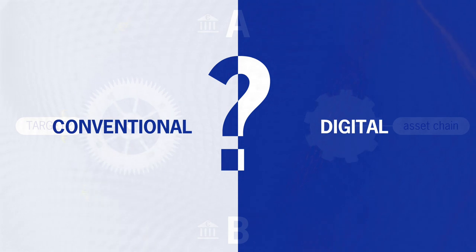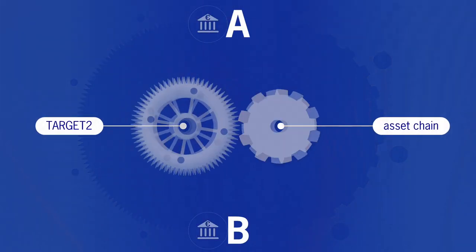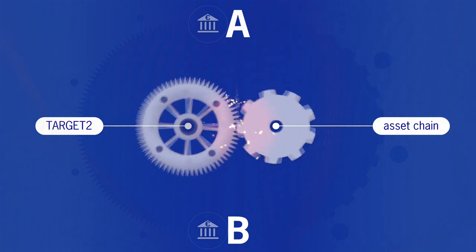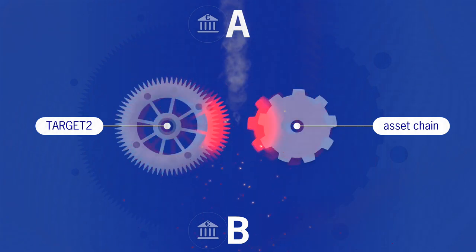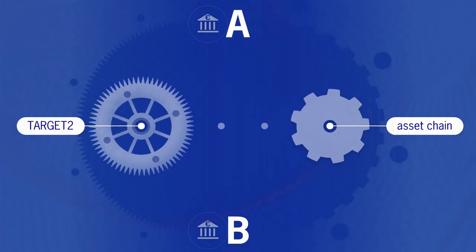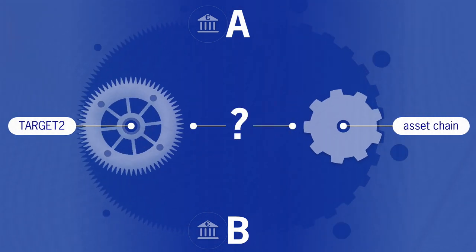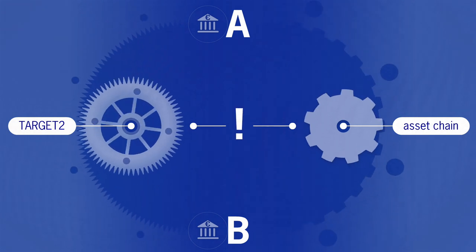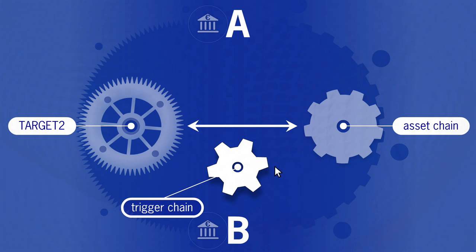The lack of a true connection between the existing and the new world causes high operative and counterparty risk when one party fails to deliver its part of a transaction. Delivery versus payment and synchronization between DLT and existing infrastructures is essential. The solution is a technical bridge that consists of two paths.